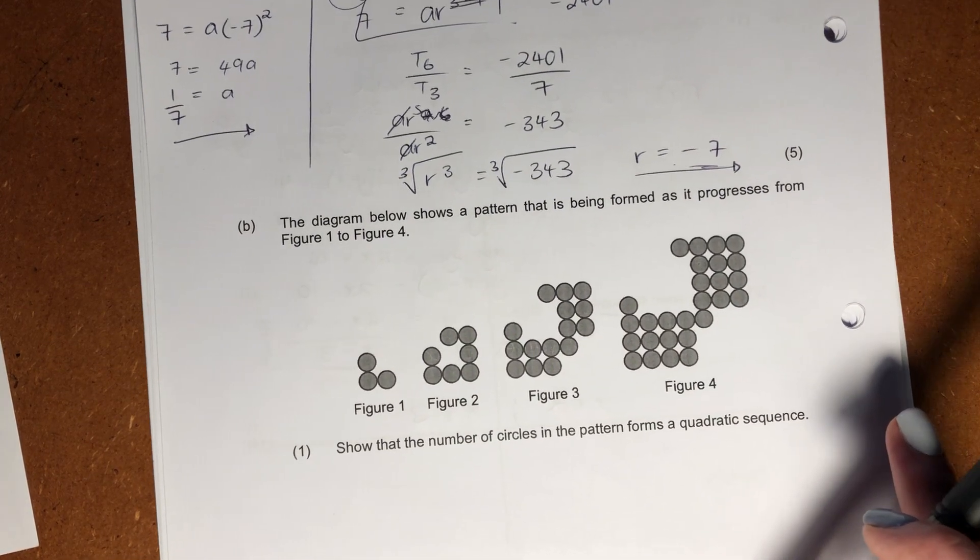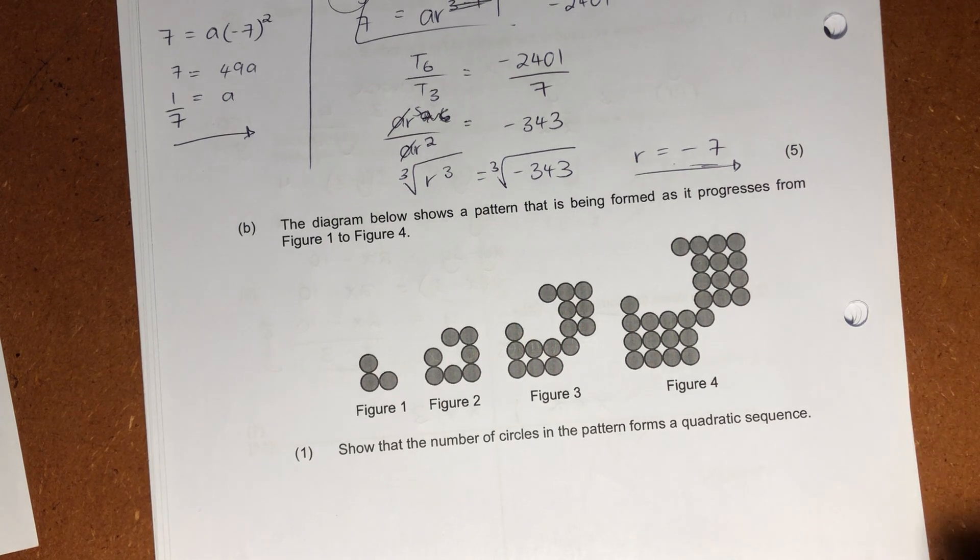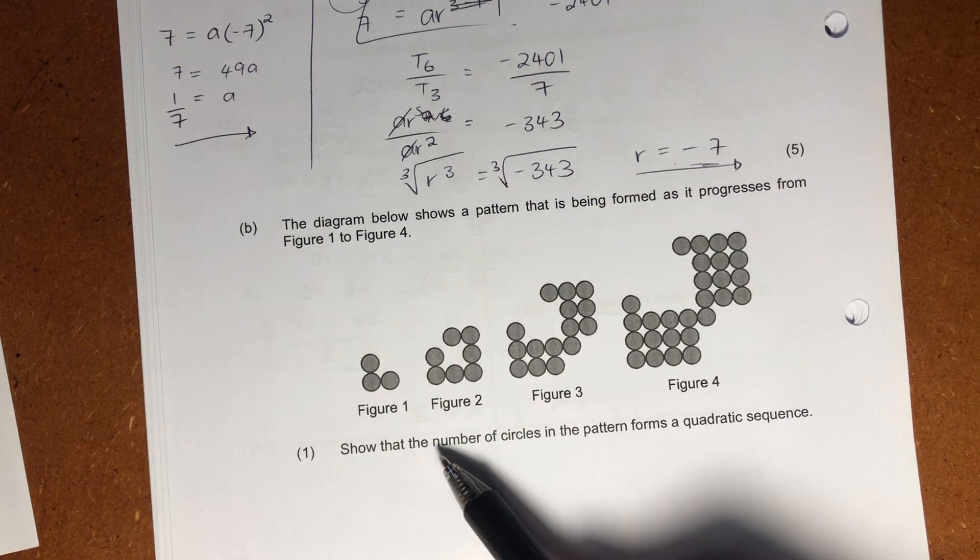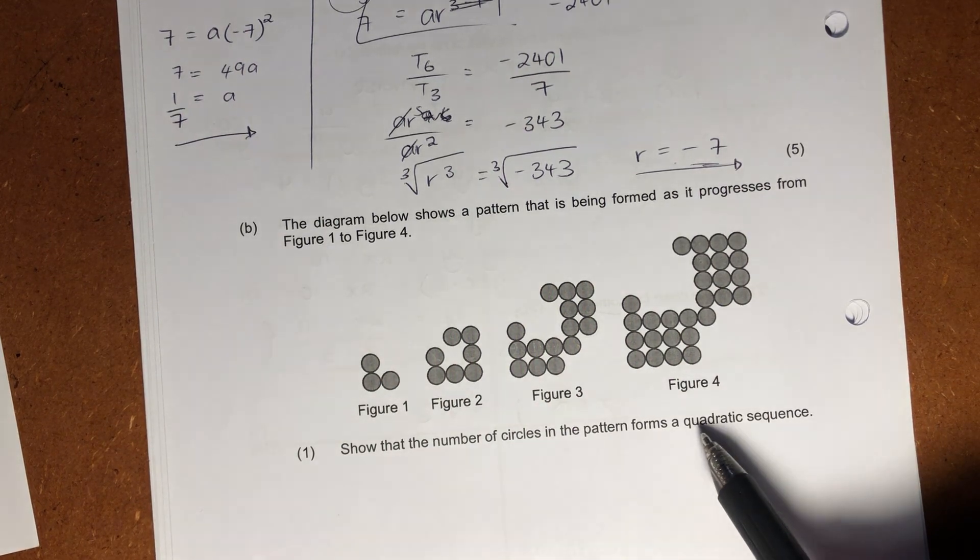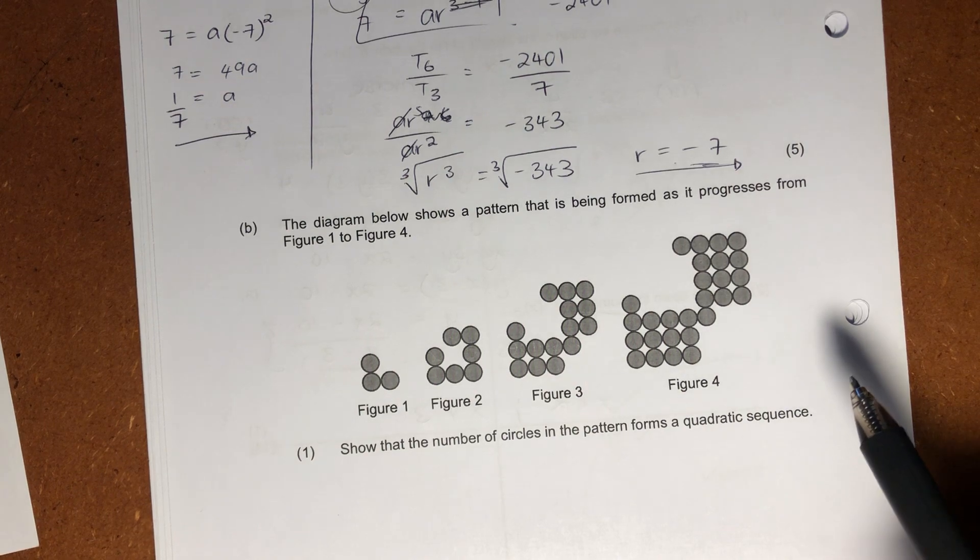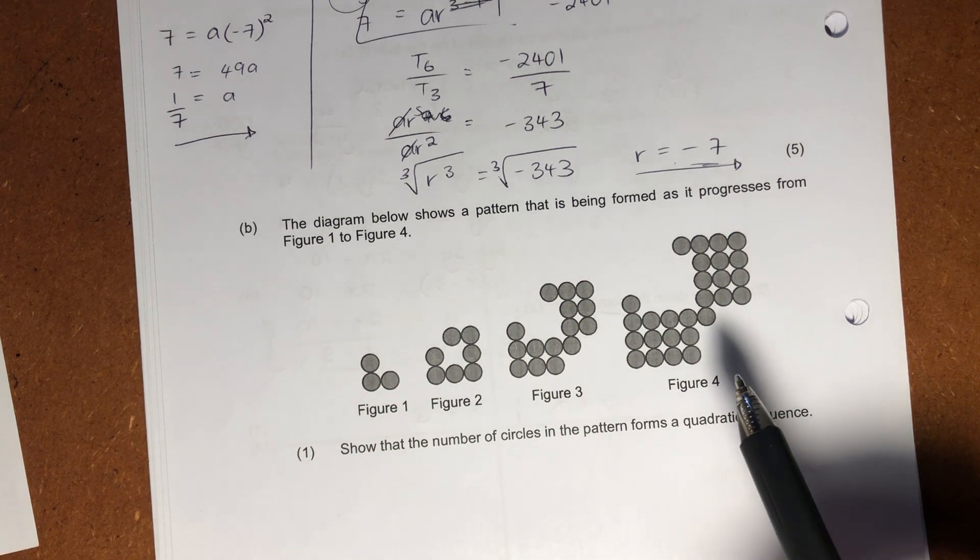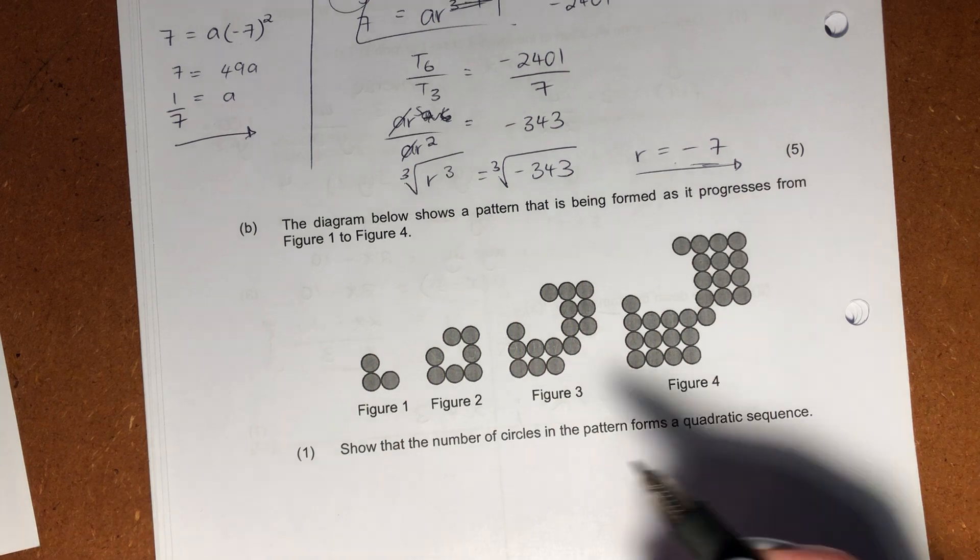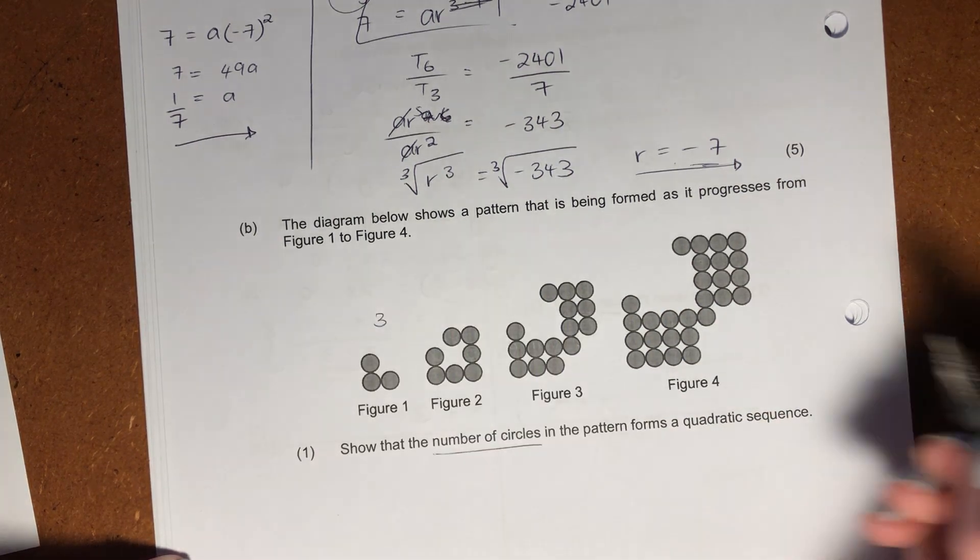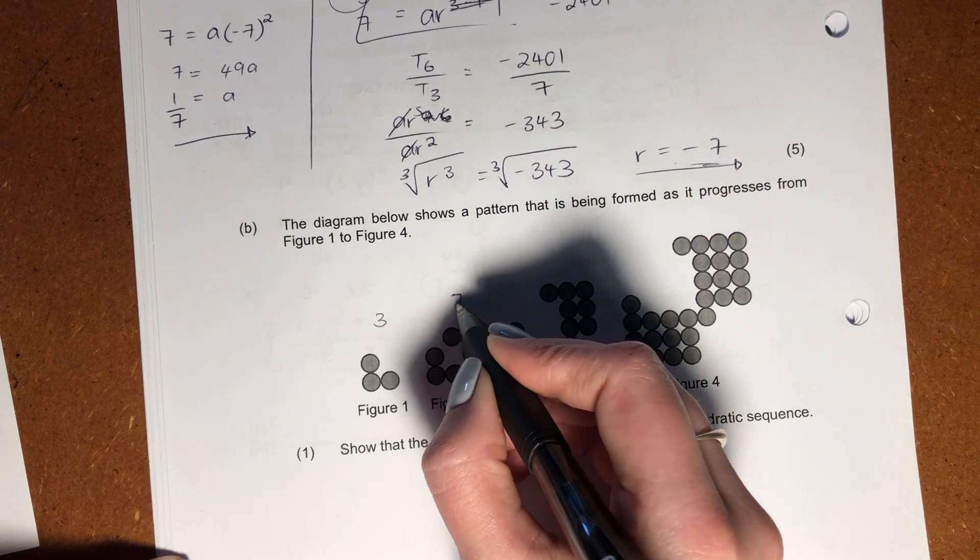Next question, I'm not going to lie, when I saw this for the first time, I was like, okay, this looks a little bit tricky, but it's not too bad. Okay, so it says, the diagram below shows a pattern that is being formed as it progresses from figure 1 to figure 4. Show that the number of circles in the pattern forms a quadratic sequence.